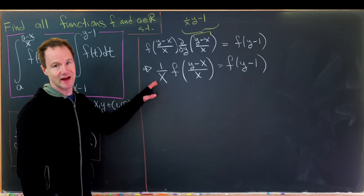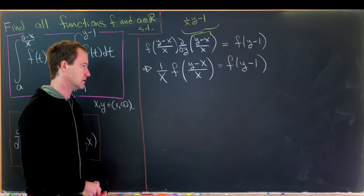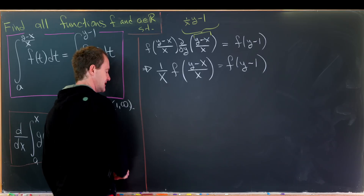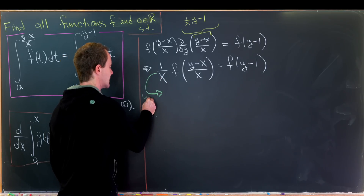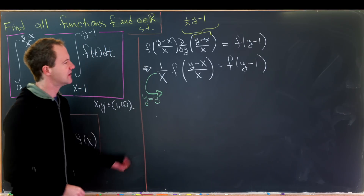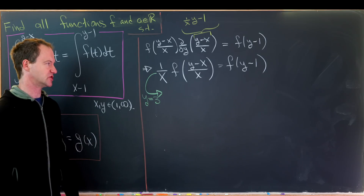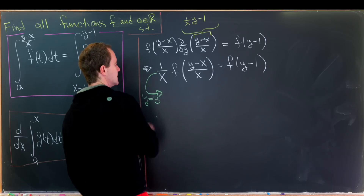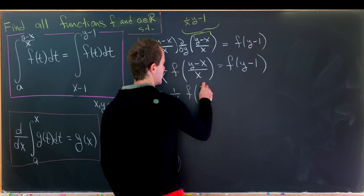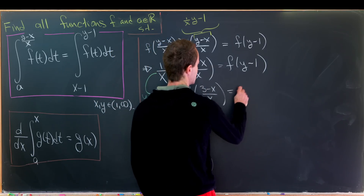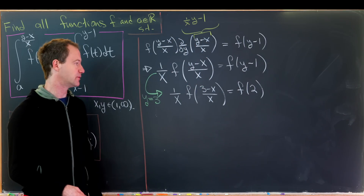We've got an x outside of everything, so we'll keep x as a variable and set y equal to a constant — let's say y equals 3, since 3 minus 1 equals 2, which is firmly in the range. That leaves us with (1/x) times f((3 minus x)/x) equals f(2), giving us a fairly simple functional equation.